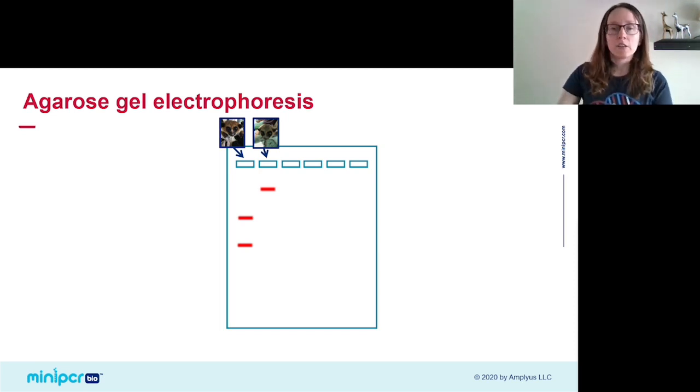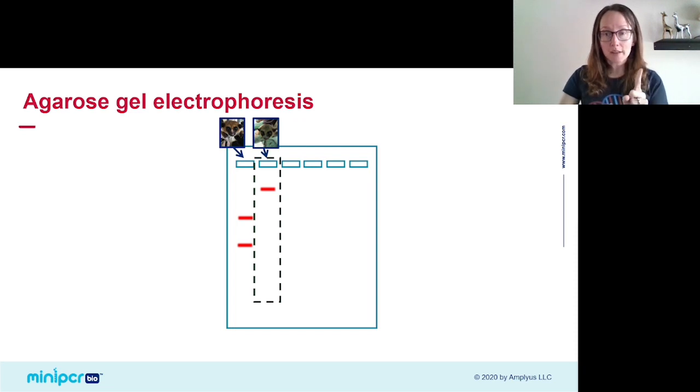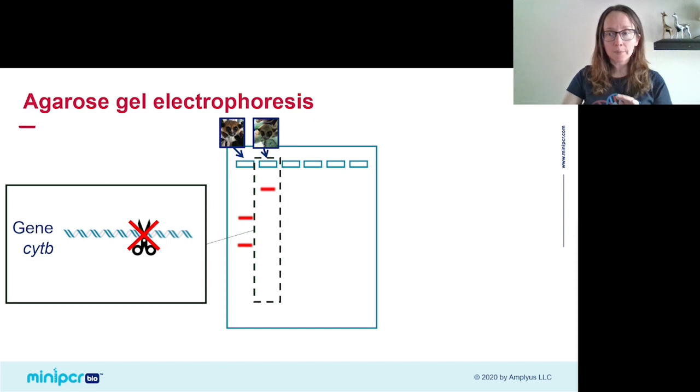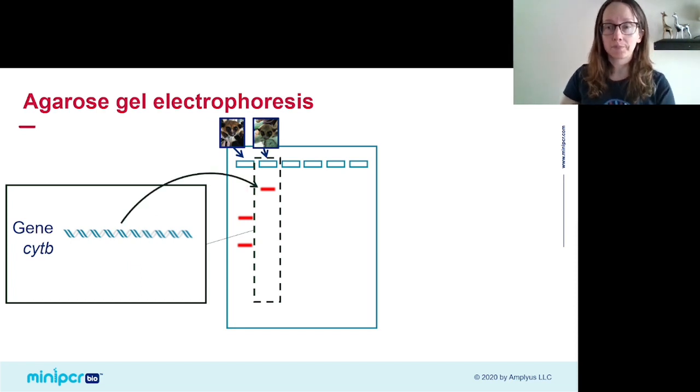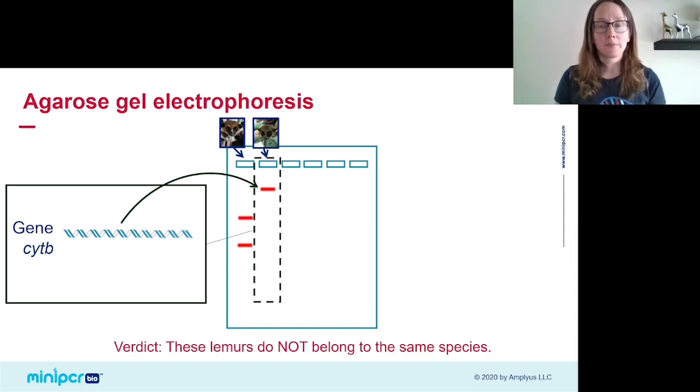Now let's look at our mystery lemur. In this lemur's DNA sample, we see just one band, meaning the DNA fragments in this sample are all of the same size, and that size is larger than either of the fragments we saw in the first lemur sample. This means that the restriction enzyme we used did not cut this lemur's Cyt B gene. Remember, that enzyme only cuts the Cyt B sequence in lemurs from the species C. crossleyi. Because it didn't cut, we can assume our mystery lemur is not from C. crossleyi.